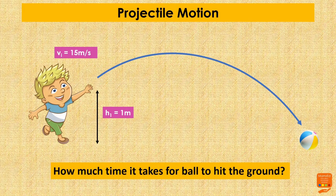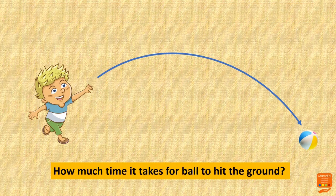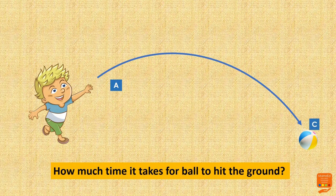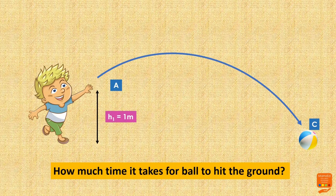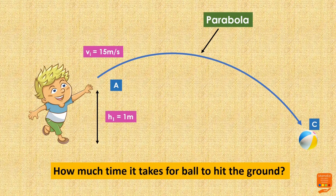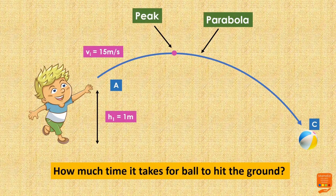To calculate this, let's first take a look at what we know. We will take the ground as our reference and everything will be measured from the ground. Let's call A the initial position of the ball when it was in the boy's hand, C the final position when the ball touches the ground, and B the peak position where the ball reaches its maximum height.